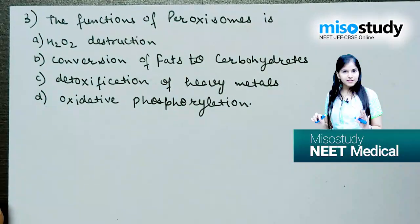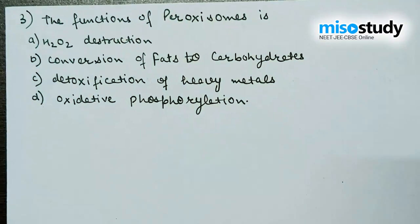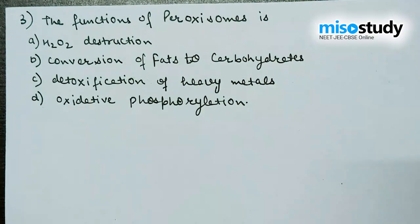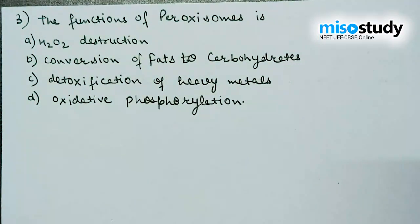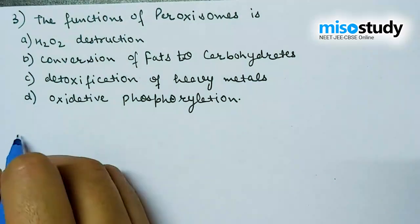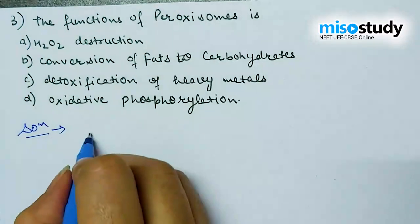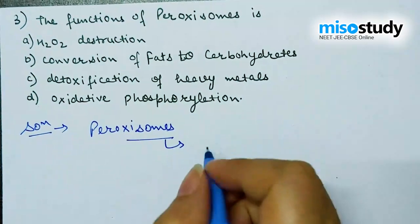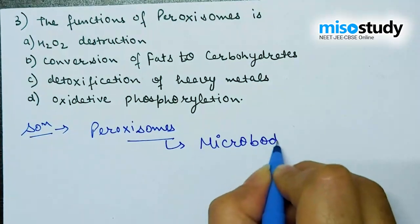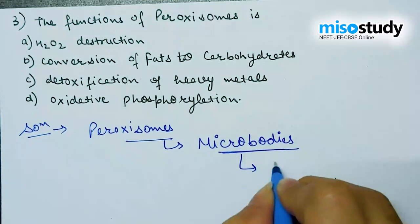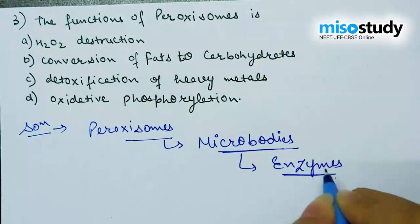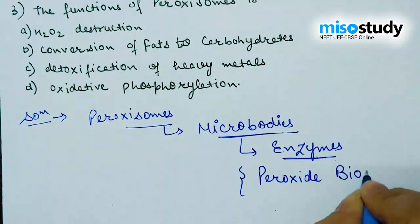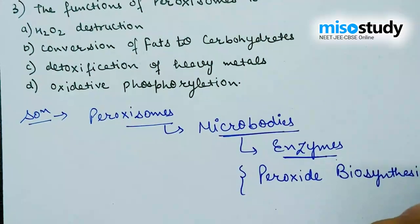Let's discuss the next question: the function of peroxisomes is — option A: H2O2 destruction, B: conversion of fat to carbohydrates, C: detoxification of heavy metals, and D: oxidative phosphorylation. Peroxisomes are micro bodies that contain enzymes for the formation of peroxides — that's why the name is peroxisomes. The peroxisomes contain one or more peroxide-producing enzymes like urate oxidase.